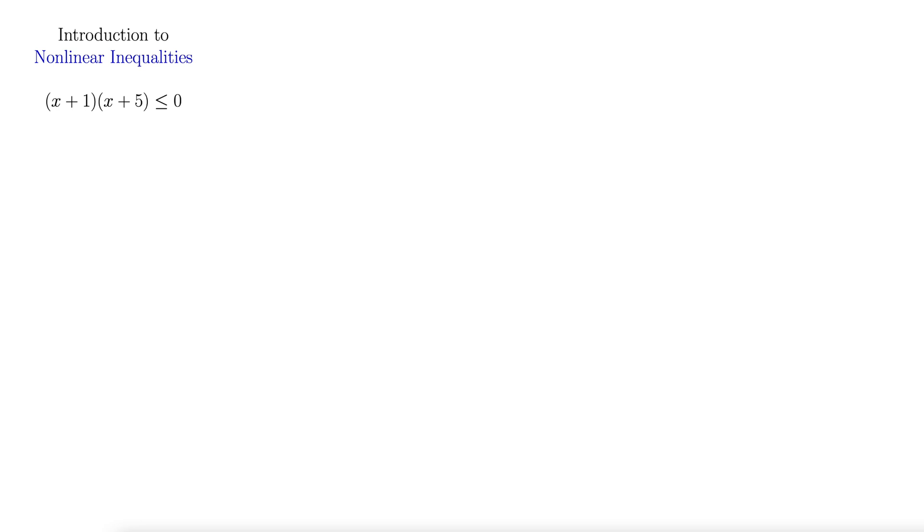Nonlinear inequalities are a lot more involved to solve than it seems like they would be. So here's an example: (x + 1)(x + 5) ≤ 0. As soon as you see something of the form x squared and an inequality, you set aside some time because you have a little bit of work ahead of you. That's just how these problems go. There's an entire method and we'll get into that.